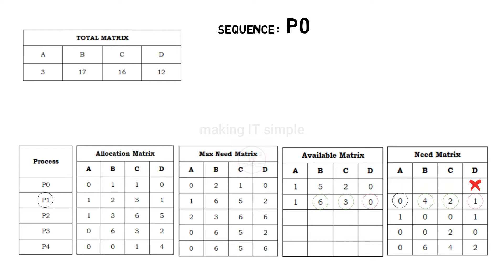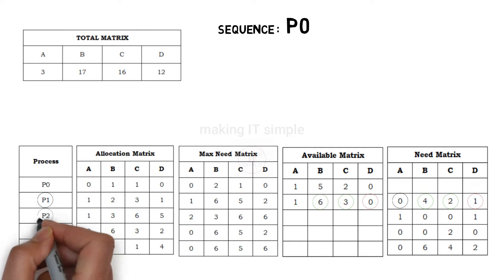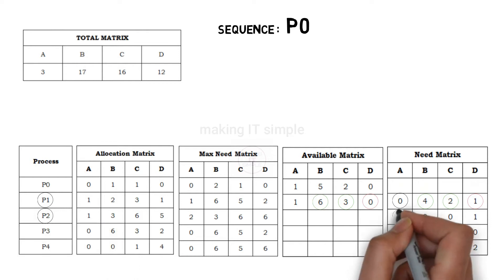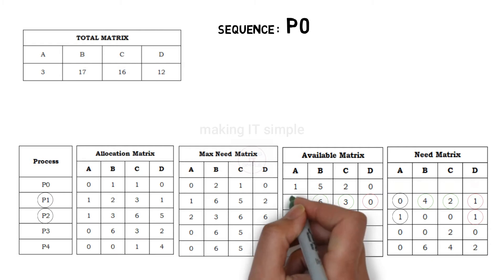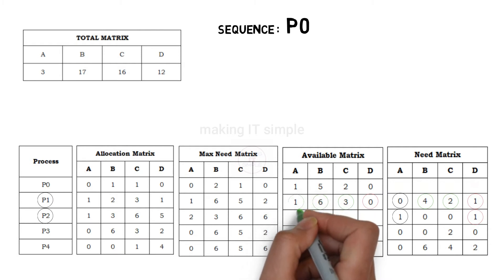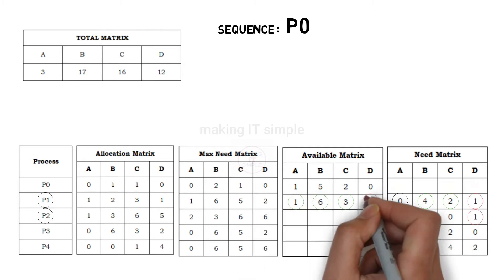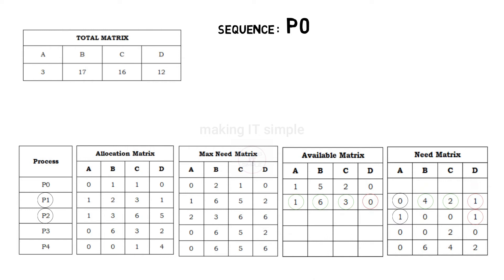Let us check process P2. It requires 1 instance of resource A and 1 instance of resource D. We have instances of resource A, but don't have instances of D left. So process P2 also cannot be executed.